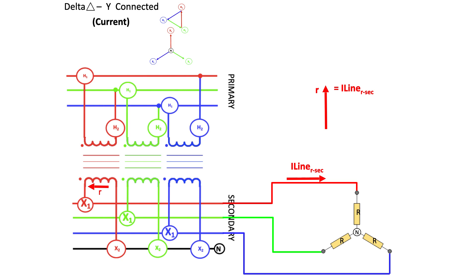The power is going to be coming from the primary side connection because the load is on the secondary. So the currents on the red phase as well as the other phases are going to be flowing into the spot of the primary winding. And if the current is flowing into the spot of the primary, it has to be flowing out of the spot on the secondary. A similar relationship holds true for the other two phases.